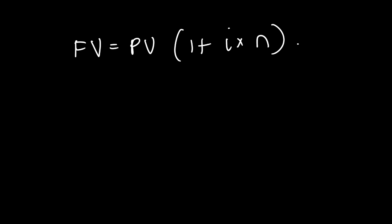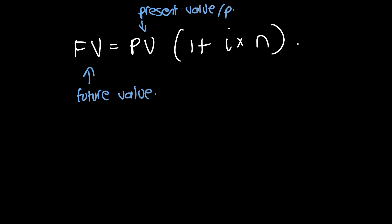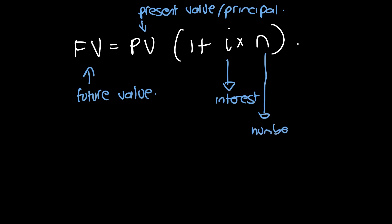Let's remind ourselves what everything means. Future value is the amount returned at the end of the period. Present value is the principal. i is the interest rate — more specifically the simple interest rate. And n is the number of periods the loan is held.